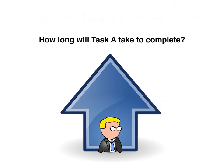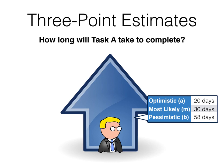We do that through what's known as three-point estimates. In this case, we ask the estimator to provide three different estimates. One, an optimistic estimate — if everything goes perfectly well, what is the duration we suspect we could get this done in? What is the pessimistic? So at the other end of the spectrum, if things all go poorly, how long do we think it might take? And then finally, the most likely — based on their expert judgment, what is the most likely time that this task will be done in?